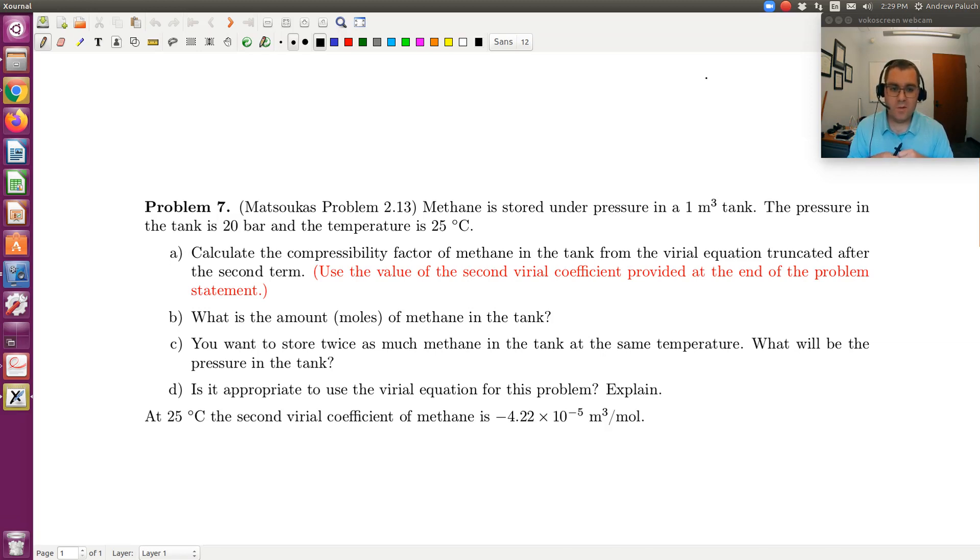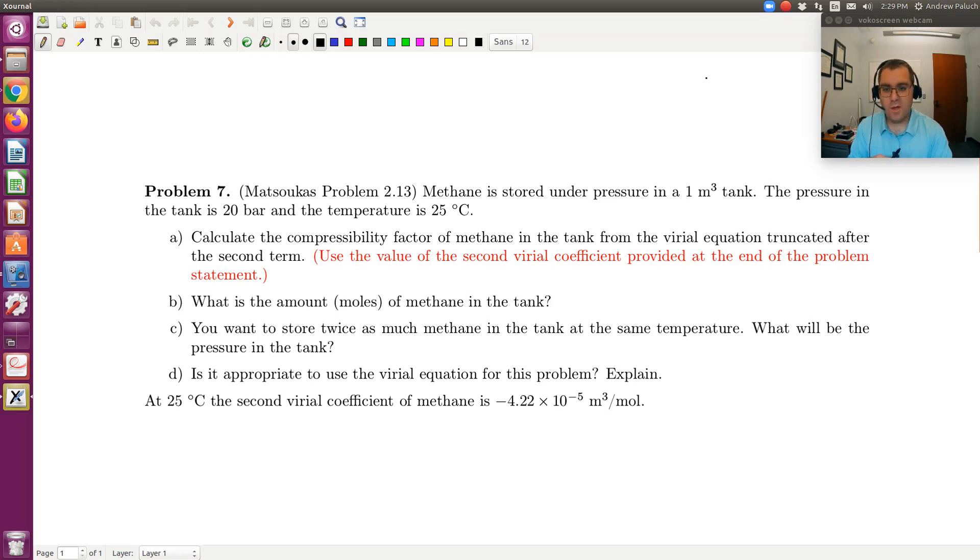So methane is stored under pressure in a one-meter-cube tank. The pressure in the tank is 20 bars, and the temperature is 25 degrees C. And I see at the bottom of the page at 25 degrees C, we're given a value of the virial coefficient. So we'll set the problem up, and then remember it's up to you to actually do the calculations to carry it through.